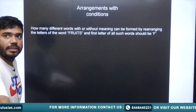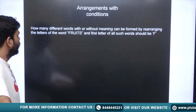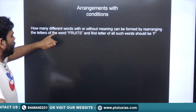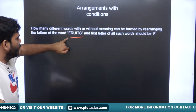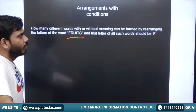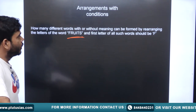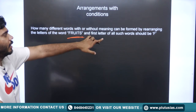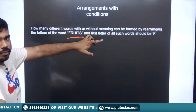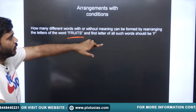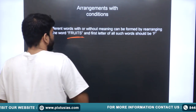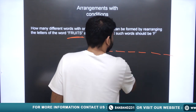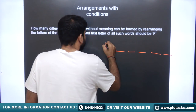The second example uses the same word FRUITS, but with one constraint: the first letter of all such words should be F. This is a rearrangement with a single condition, and we have to find the number of possibilities.